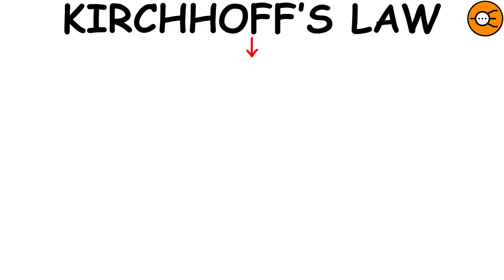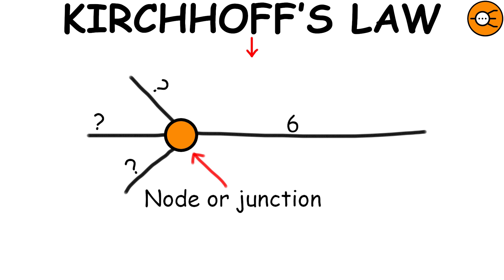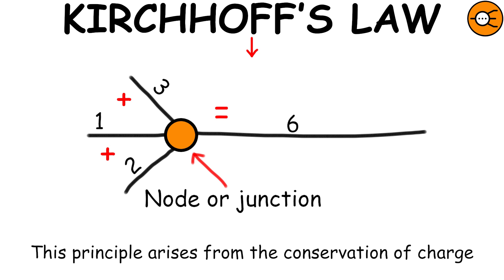Kirchhoff's Circuit Law states that for any node or junction in an electrical circuit, the sum of the currents flowing into that node is equal to the sum of the currents flowing from that node. This principle arises from the conservation of charge.